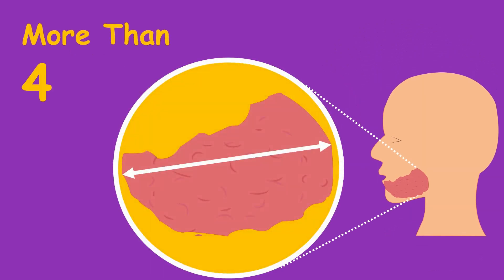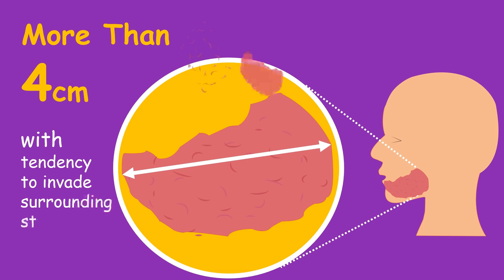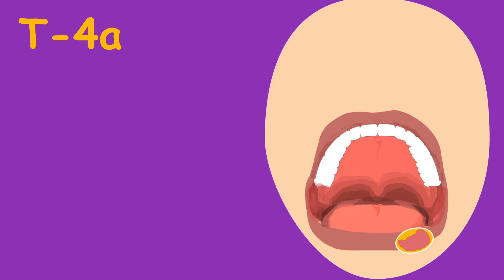in T4 it has a tendency to invade surrounding structures. T4 is the state where the tumor is still resectable.